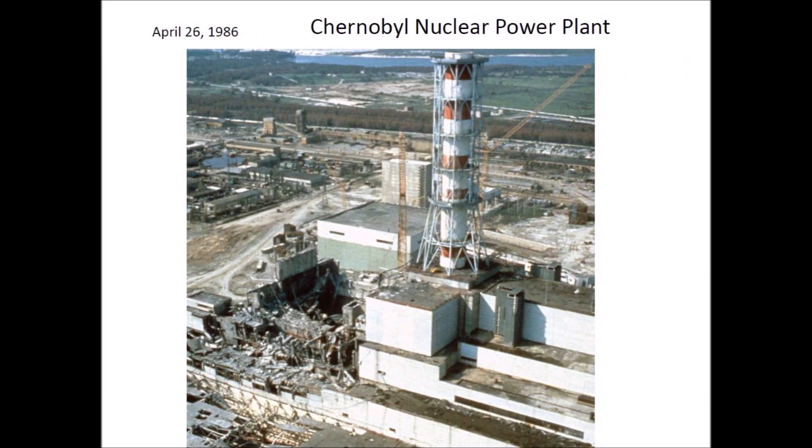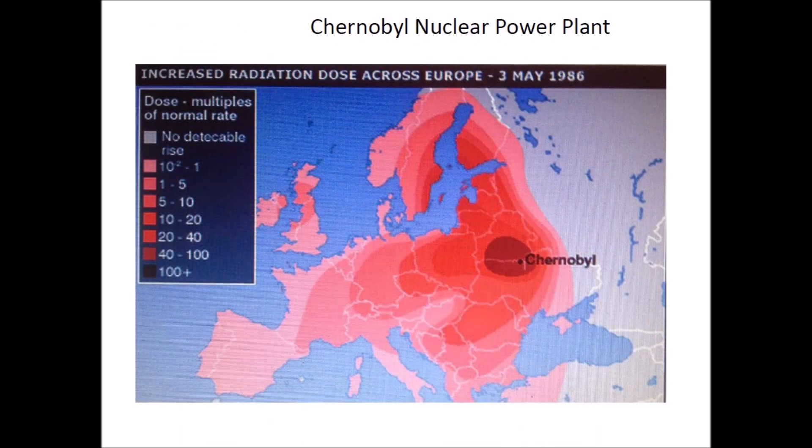The Chernobyl nuclear disaster occurred on April 26, 1986 at the No. 4 reactor in the Chernobyl nuclear power plant near the city of Pripyat in northern Ukraine. The accident started during a safety test, but unstable conditions and reactor design flaws caused an uncontrolled nuclear chain reaction resulting in an open-air reactor core fire that released airborne radioactive contamination for about nine days. By May of 1986, radiation from Chernobyl had spread throughout much of Europe, and more than 30 years later, milk in some parts of Ukraine still has radioactivity levels up to five times the official safe limit.